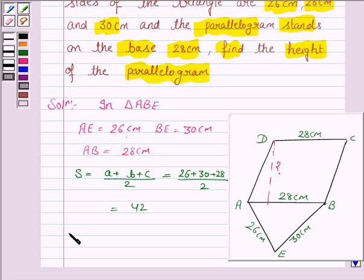Now, the area of triangle ABE is given by the square root of S times S minus A times S minus B times S minus C.